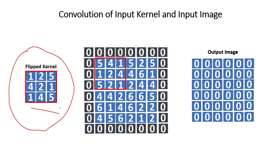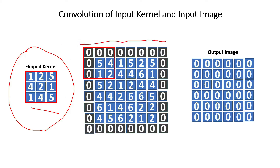Next, we pad the input image and then slide the flipped kernel over the input image, as shown here in this direction.